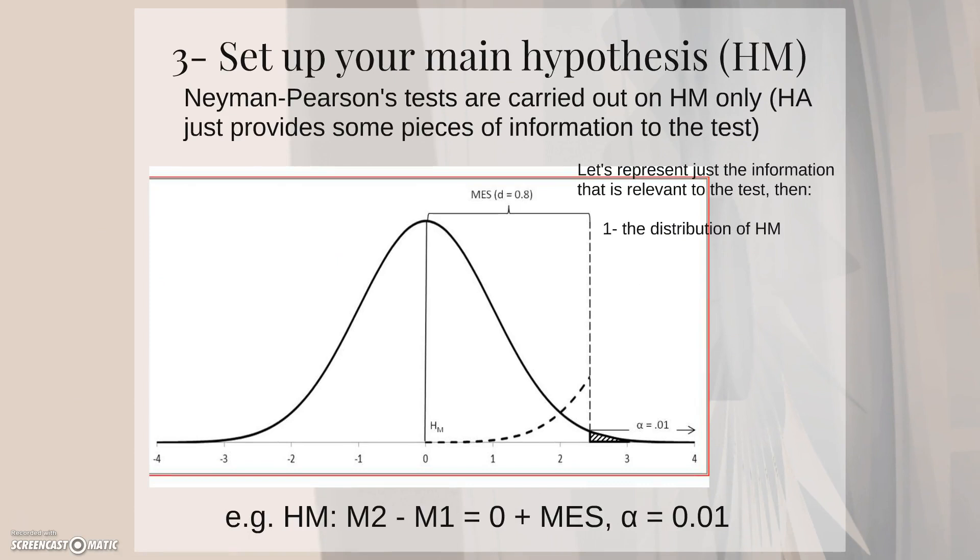The third step in the procedure is setting your main hypothesis. Neyman-Pearson's tests are carried out on the main hypothesis only, while the alternative hypothesis just provides some pieces of information to the test. Let's represent this main hypothesis here now.